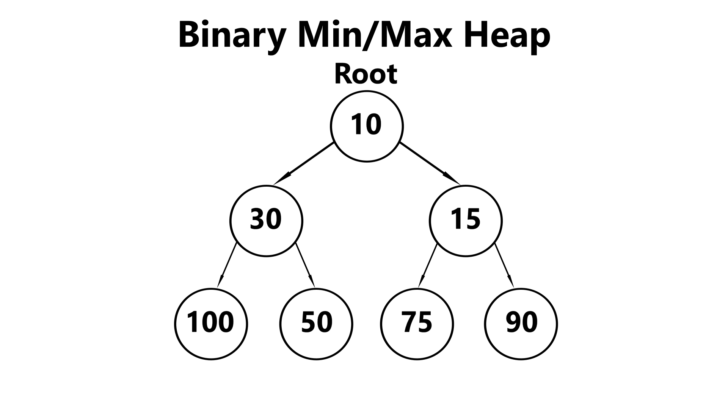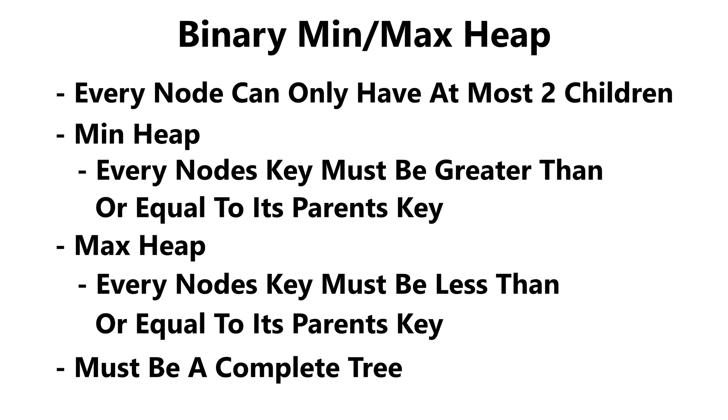The same is true for a max heap, but in reverse. Every node's key within a max heap must be less than or equal to its parents. So your root should always be the largest key within our tree. And as we go down our tree, the values should continue to get smaller and smaller.